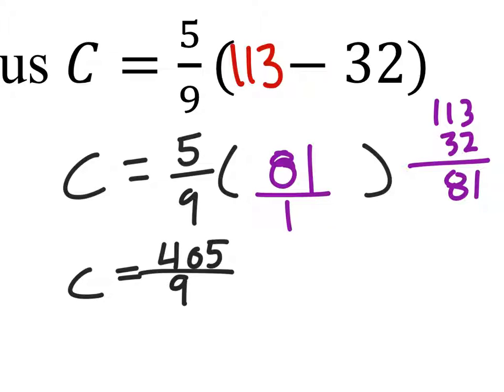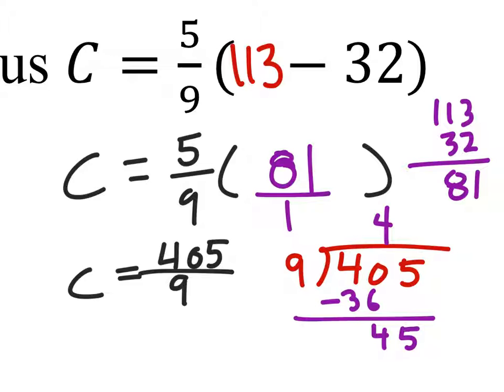Then we can divide. 405 divided by 9. So what is that? 9 times 4 should be 36, and 45 is 5. And we have zero remaining. That's nice. So it looks like the answer would be 45 degrees Celsius.